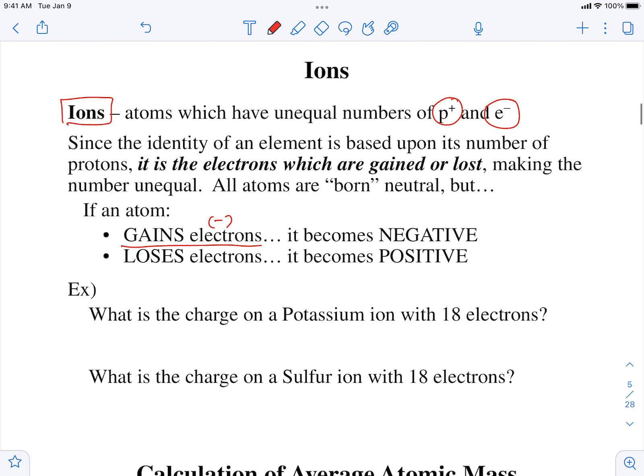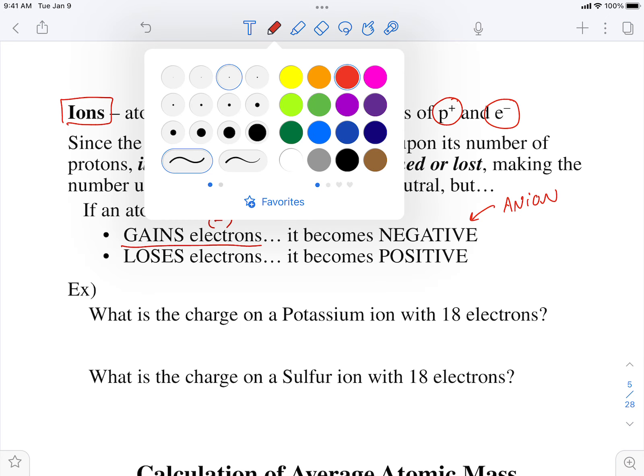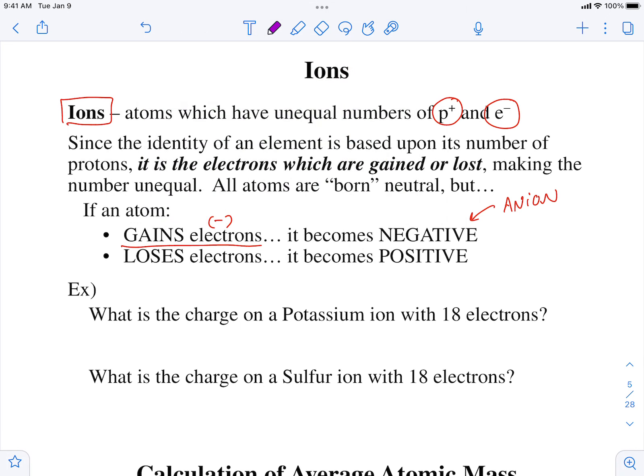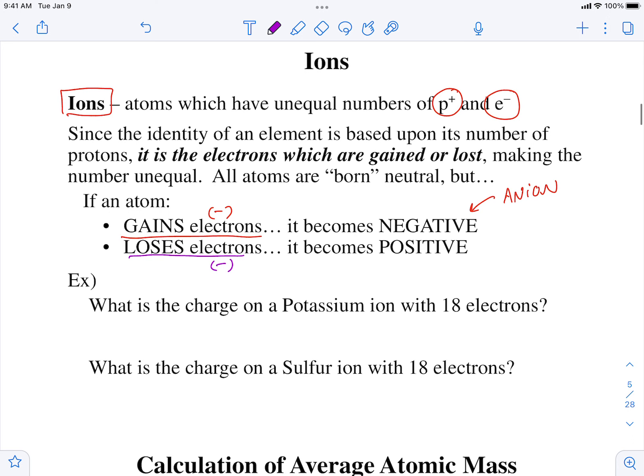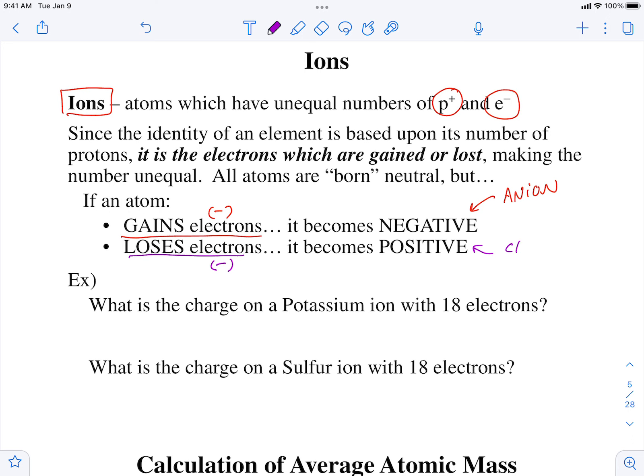The term for a negative ion is anion because the prefix A-N means without or bad. If an atom loses electrons...